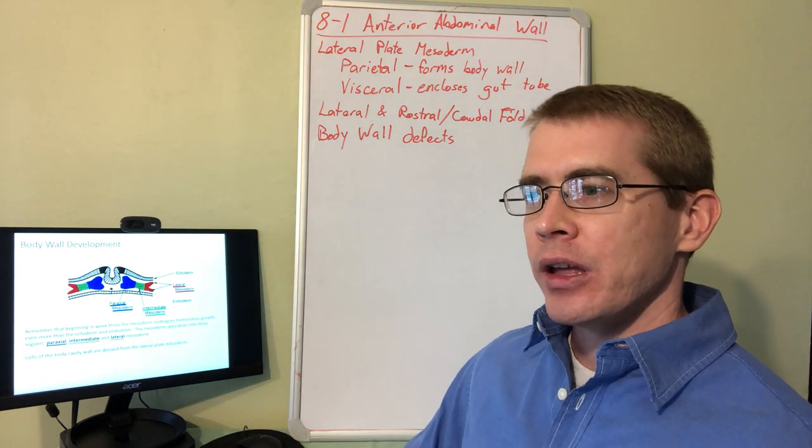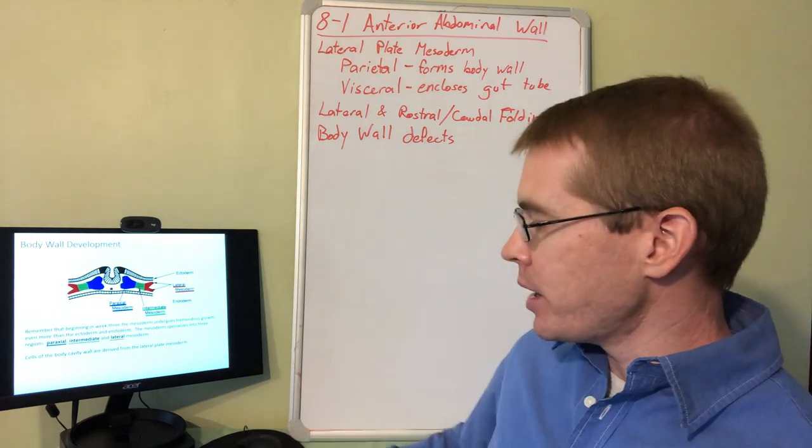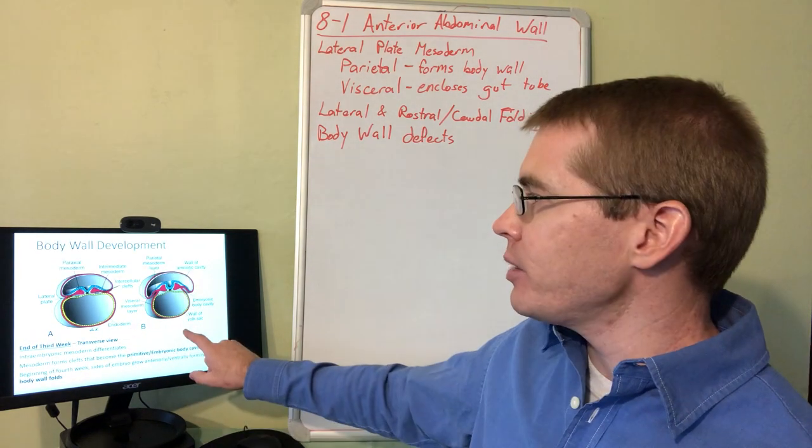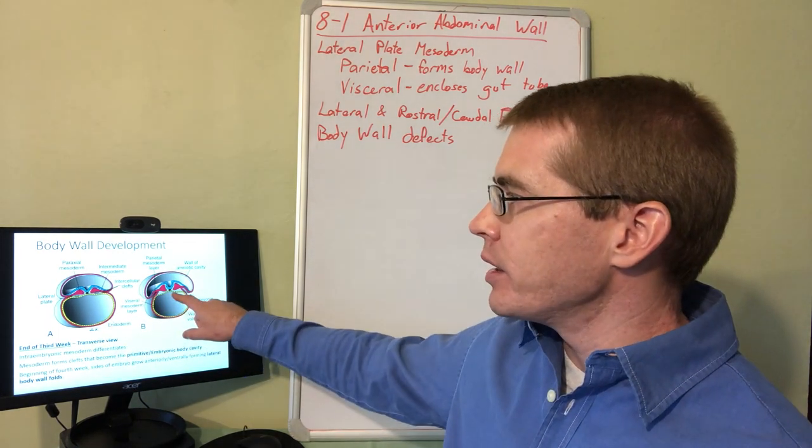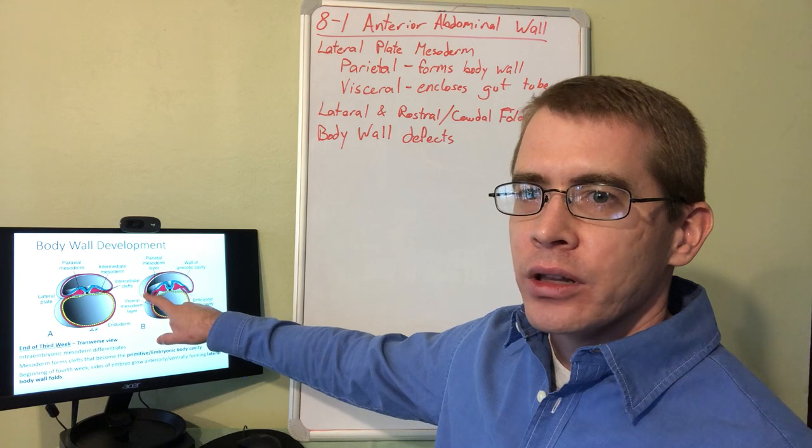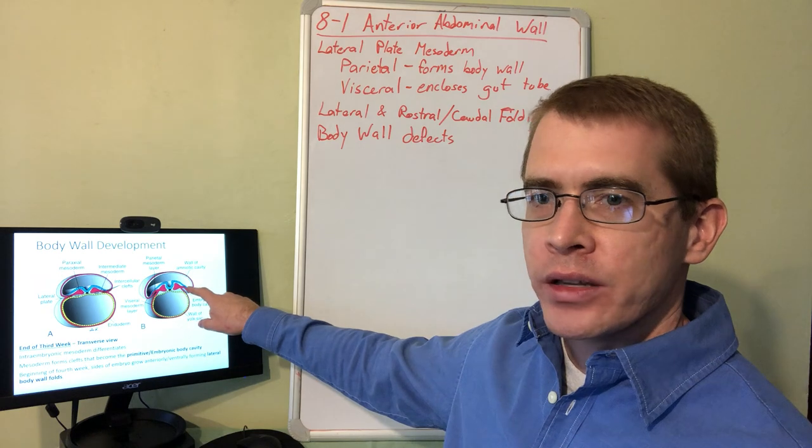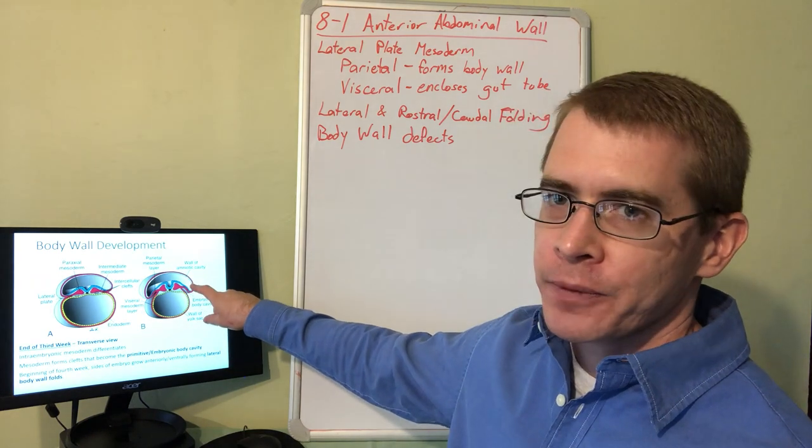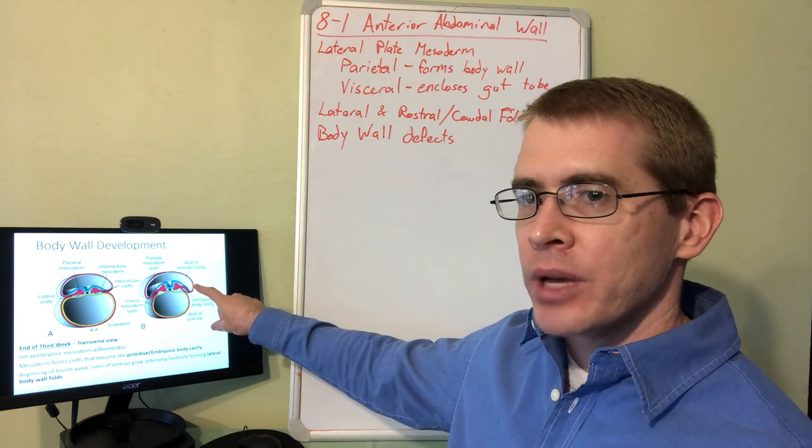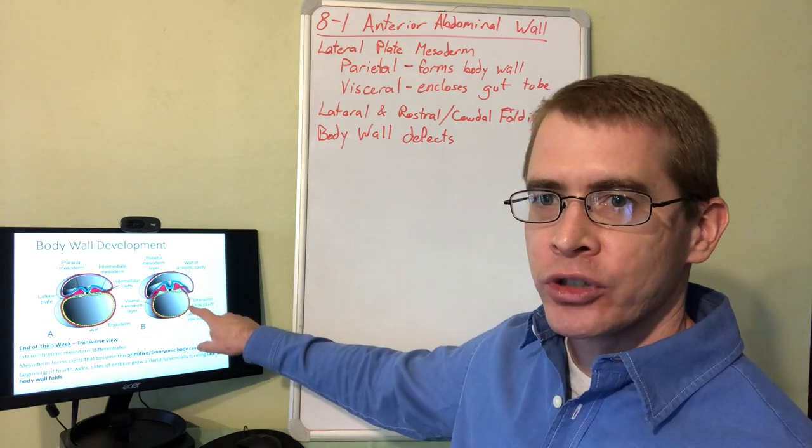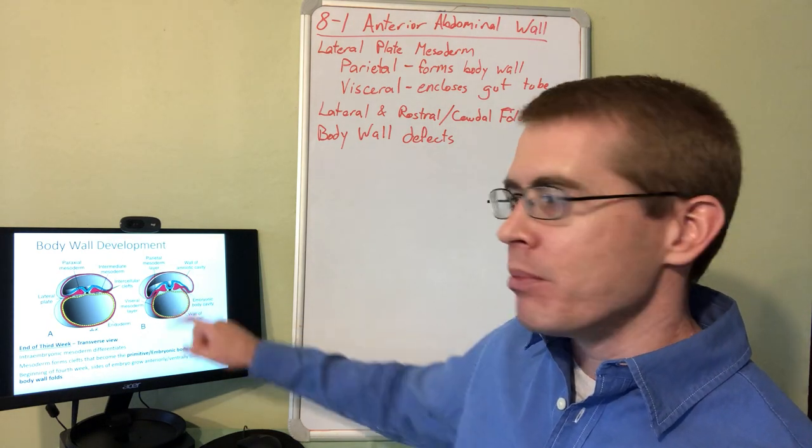And now we'll be talking about the lateral plate mesoderm in red. The lateral plate mesoderm is the portion that ends up forming the body wall. In about the third week of development, this cross-sectional view shows the lateral mesoderm forming two different layers: the more dorsal portion is the parietal layer of the lateral mesoderm, and the more ventral portion around the yolk sac is the visceral portion of the lateral mesoderm.